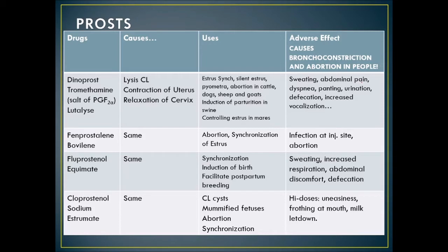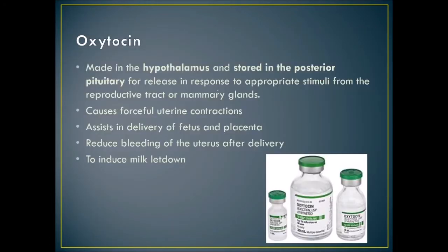Oxytocin is made in the hypothalamus and stored in the posterior pituitary for release in response to stimuli from the reproductive tract or mammary glands. It causes forceful uterine contractions, assists delivery of the fetus and placenta, can reduce uterine bleeding after delivery, and helps with milk let-down. It is stored in the refrigerator.